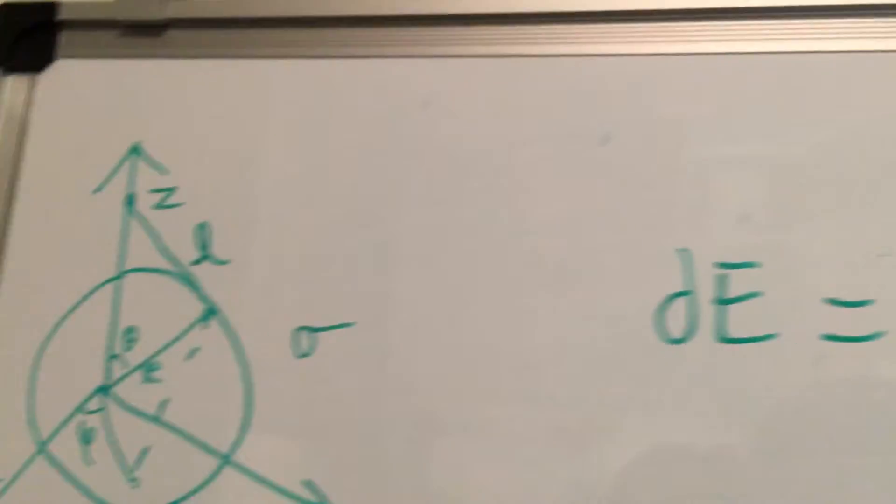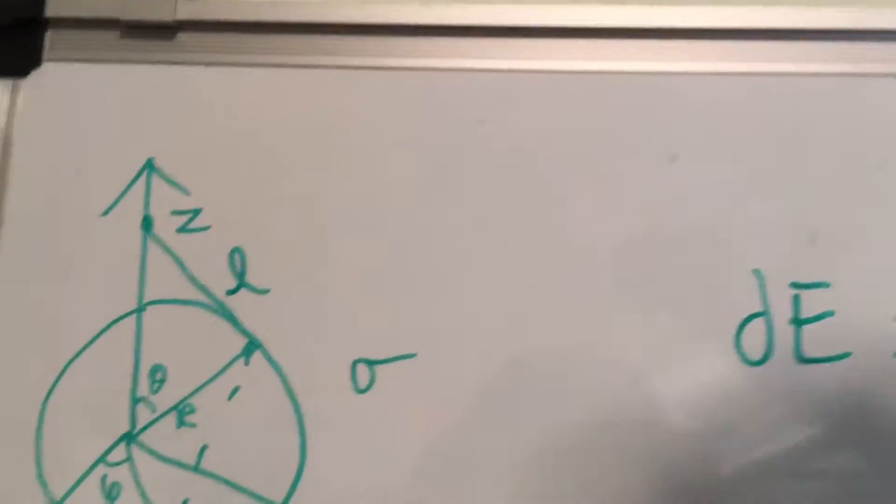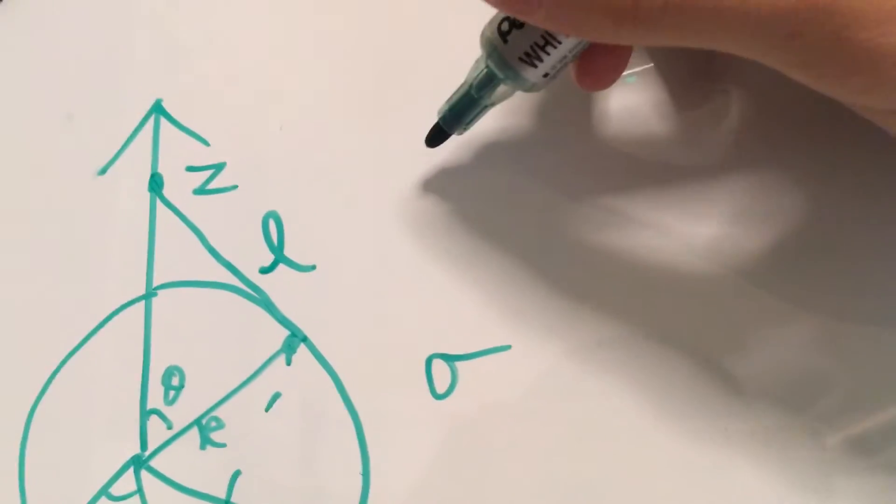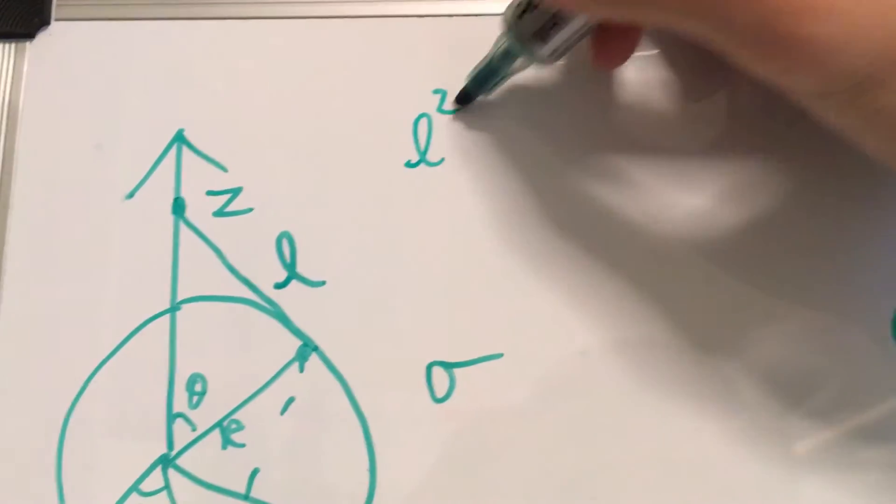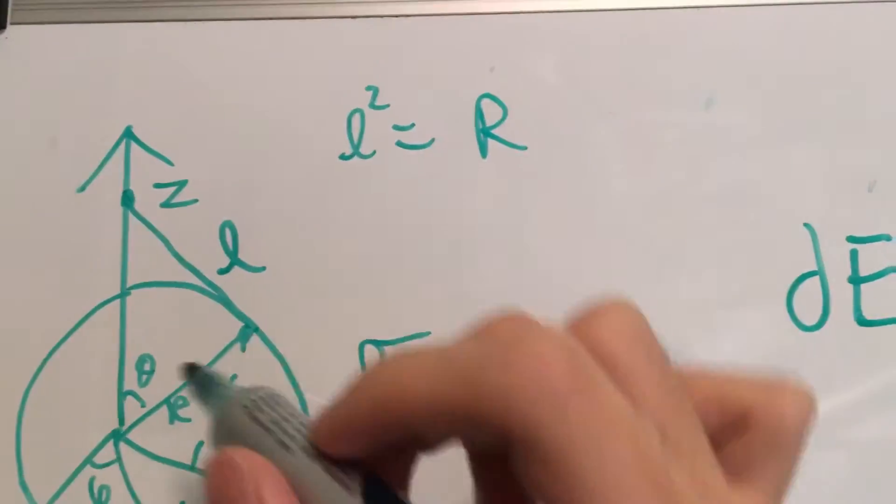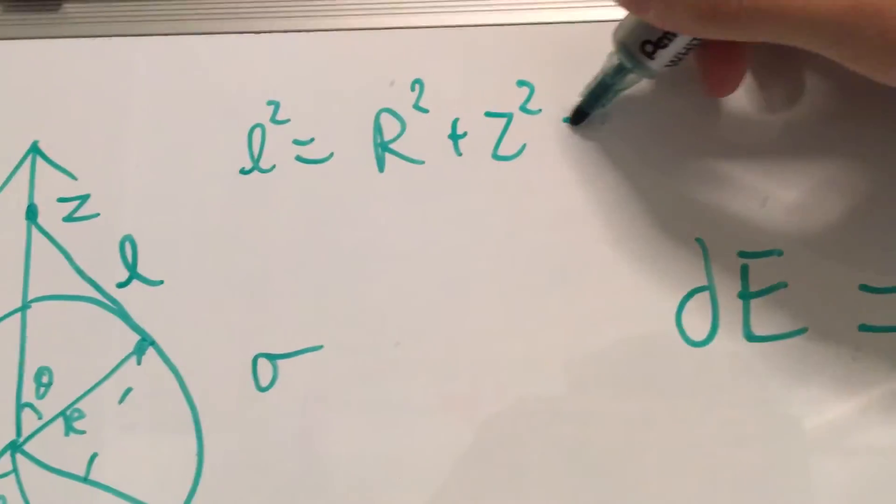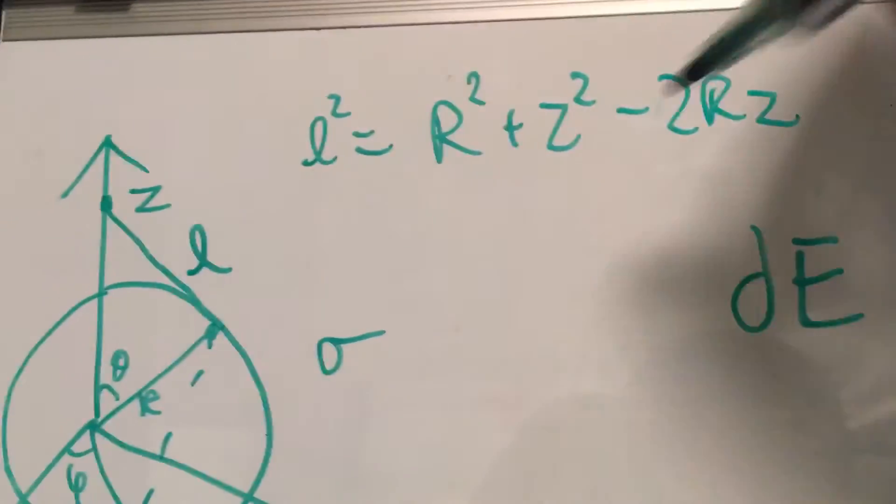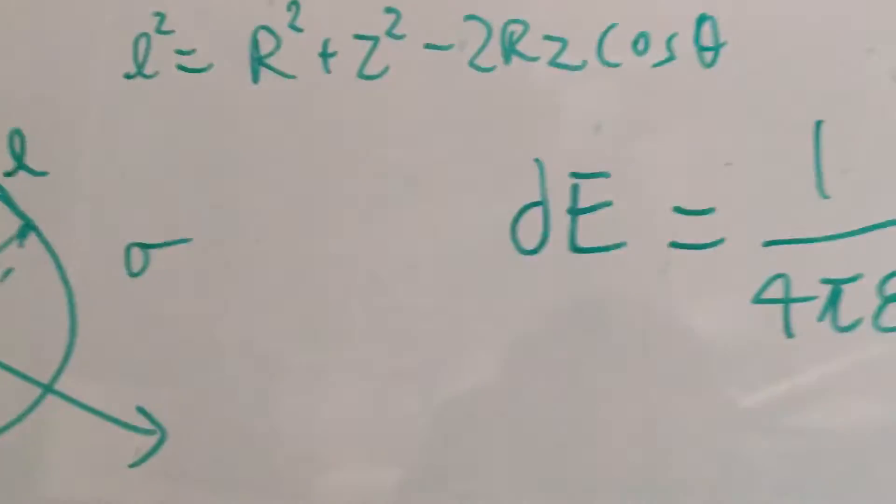And we'll have to divide this by the distance, and in this case I'll call it L for now. And what's this L? Well, we can find L by using the cosine law, which is L squared is equal to R squared, which is the radius, plus z squared minus 2Rz cosine theta. This is just the cosine law.